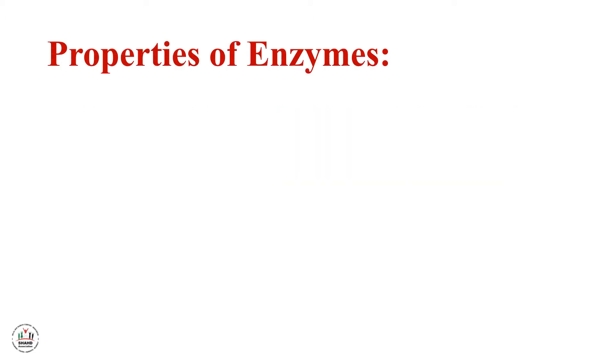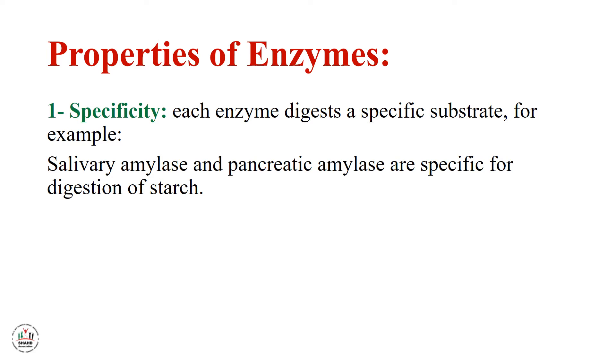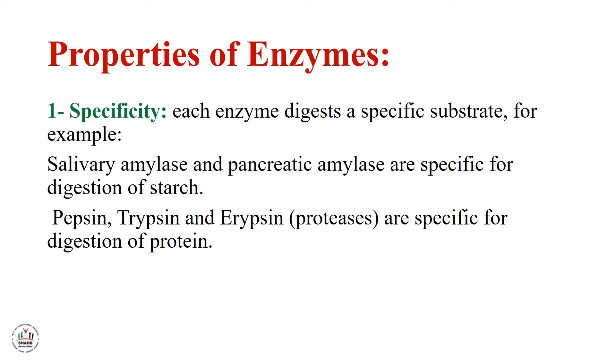Properties of enzymes. First, specificity. Each enzyme digests a specific substrate. For example, salivary amylase and pancreatic amylase are specific for digestion of starch. Pepsin, trypsin and erypsin - they are proteases - are specific for digestion of protein. Lipase, like pancreatic lipase or intestinal lipase, digest lipids.